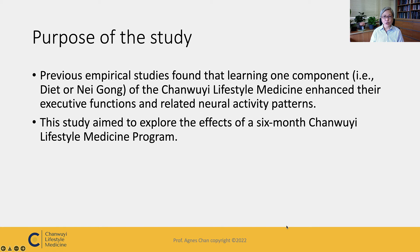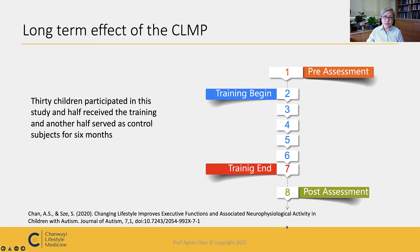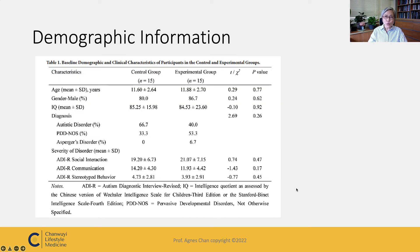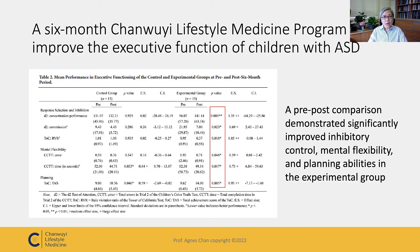In this study, 30 children participated — half received the Chan Wuyi training and half served as control subjects. There was a pre-assessment at month one, six months of training, and a post-assessment at month eight. The two groups were matched in terms of age, gender, education, and IQ. Results show that post-comparison demonstrated significantly improved inhibitory control, mental flexibility, and planning ability in the experimental group, but not the control group.